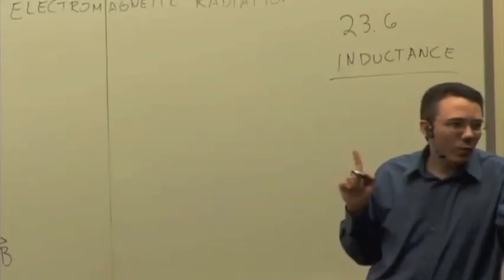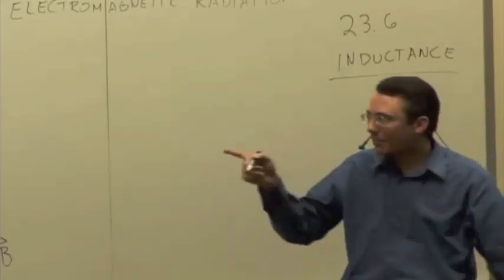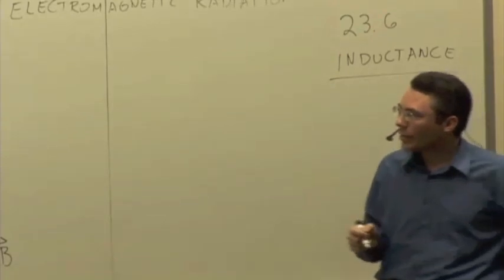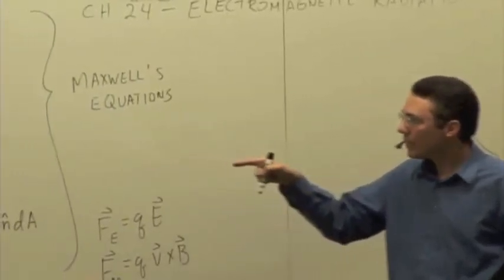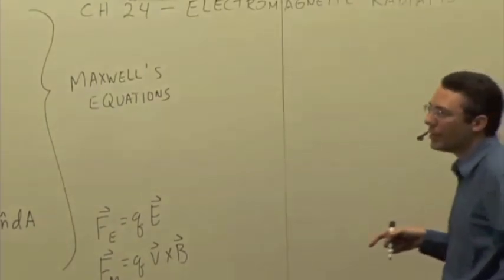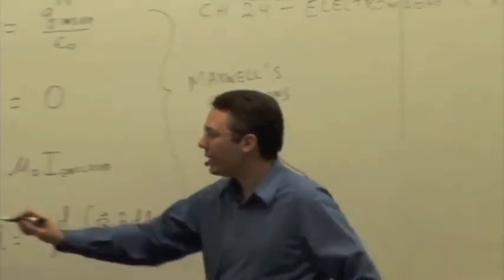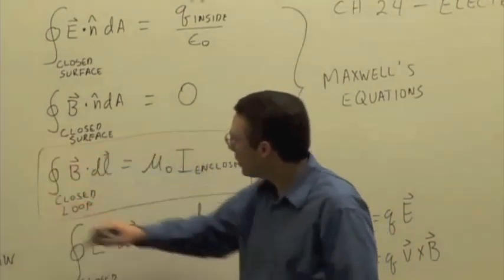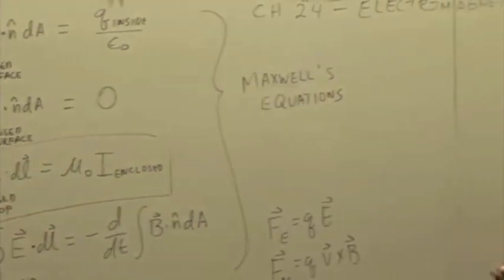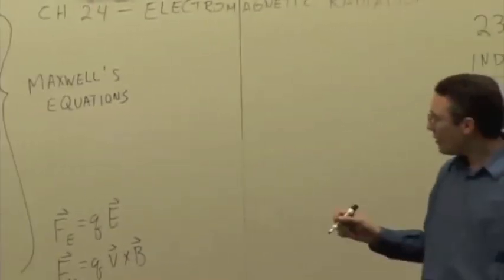But there is, in fact, one problem. In fact, it's not the complete version of Maxwell's equations. It turns out that one of these is incomplete. And it turns out that Ampere's law, as it's written here, isn't quite right. And again, it was Maxwell who was the first one to realize this. And the way you can argue it is this.